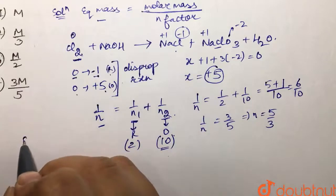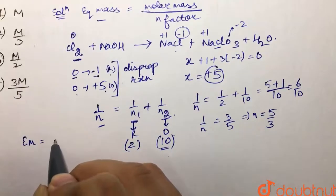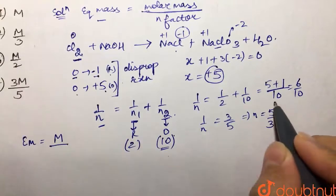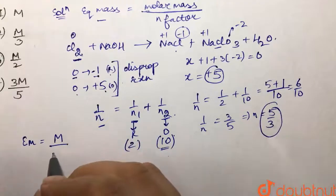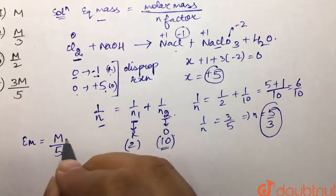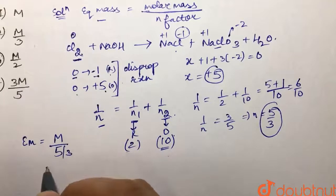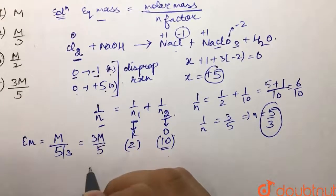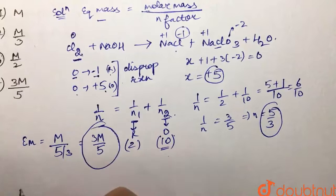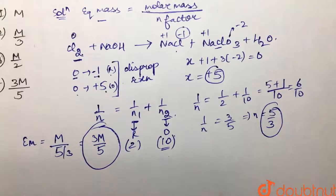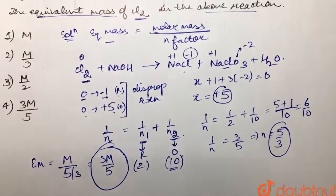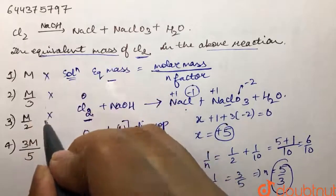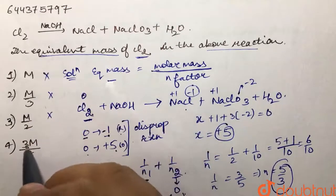Putting this into the formula: equivalent mass = molar mass / n factor = M / (5/3) = 3M/5. Looking at the options, M is not correct, M/3 is not correct, M/2 is not correct — 3M/5 is correct. Our answer is the fourth option.